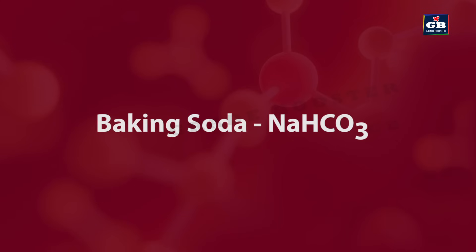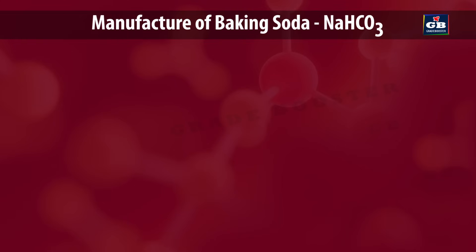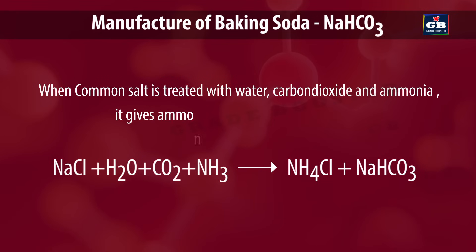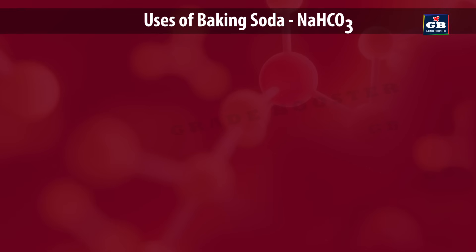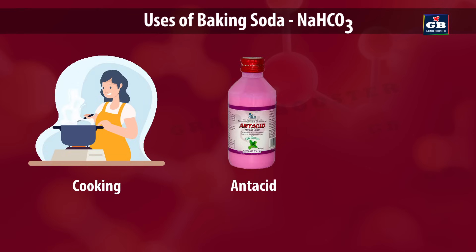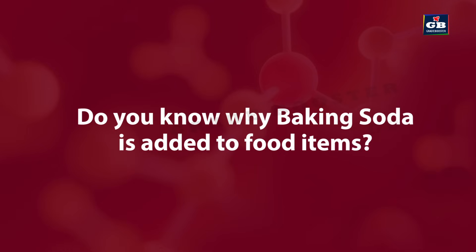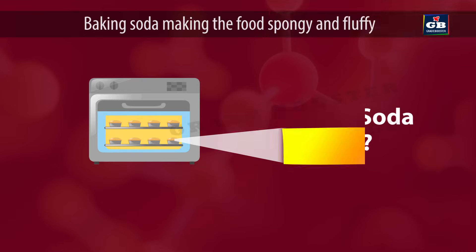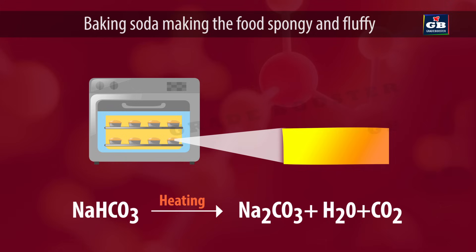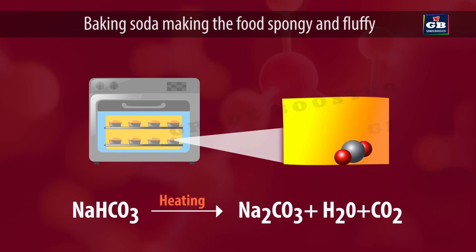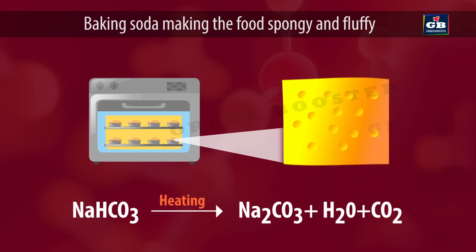Baking soda (NaHCO3) — Manufacture and uses. When common salt is treated with water, carbon dioxide and ammonia, it gives ammonium chloride and baking soda. Uses: it is used as a cooking ingredient and as an antacid to reduce stomach acidity. It is also used in certain types of fire extinguishers. When baking soda is added to food and cooked, the sodium hydrogen carbonate becomes sodium carbonate plus water plus carbon dioxide. This carbon dioxide gas makes the food item spongy and fluffy.